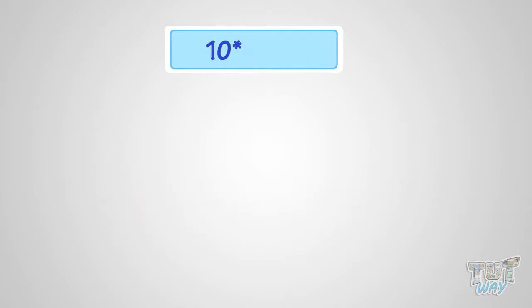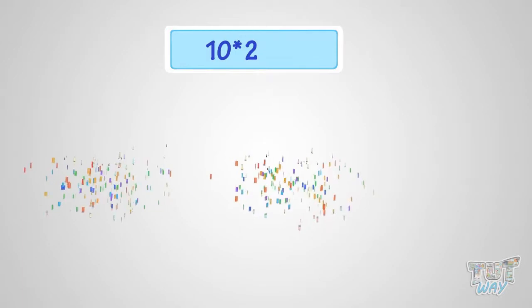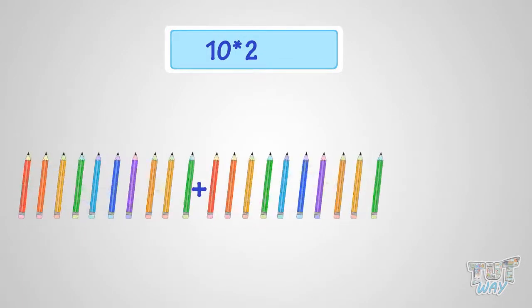What is 10 multiplied with 2? It is same as two sets of 10 pencils. So, it is 20 pencils. That is, 10 multiplied by 2 is 20.